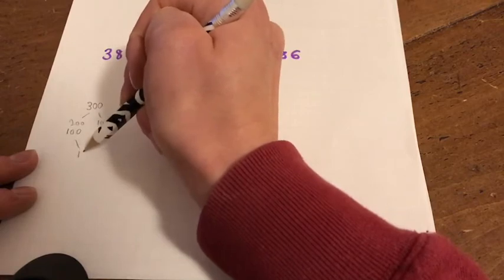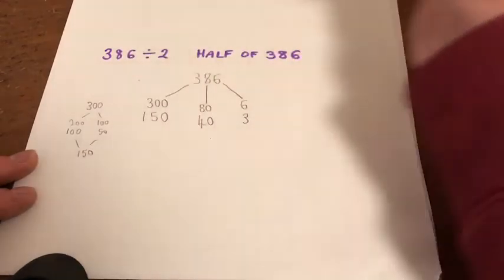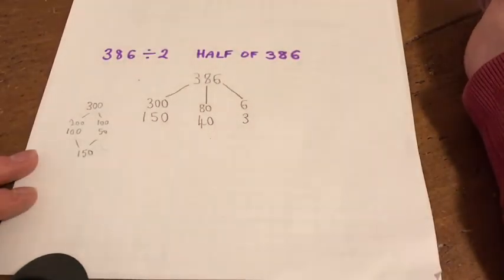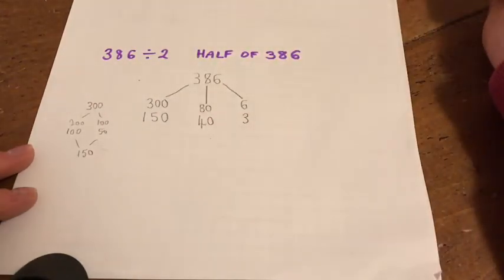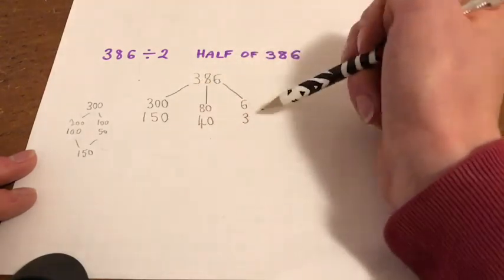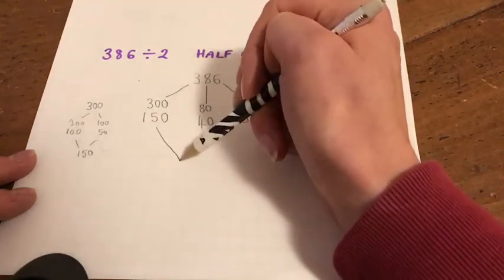So now I've halved the numbers, I'm going to recombine. So here come my lines, and adding them up.